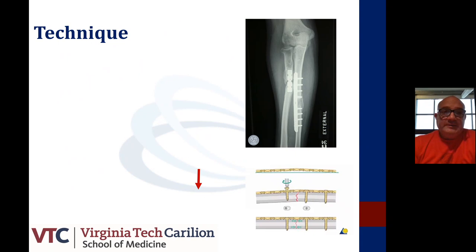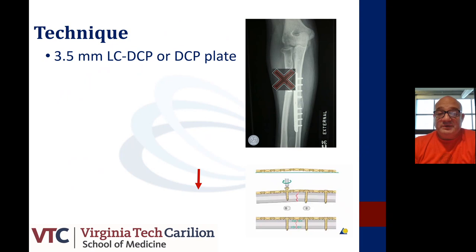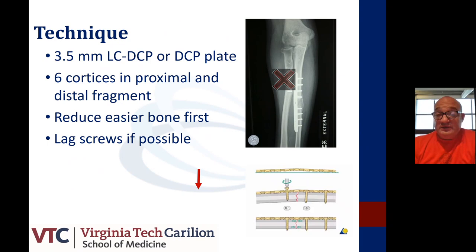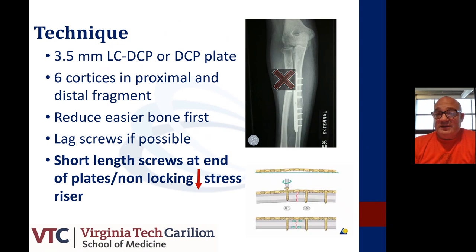You must provide a slight pre-bend when providing compression plating at the radius. For comminuted fractures with intersegmental bone loss, use long contoured plates with a good balanced screw spread. You want to avoid the short plate technique. Use 3.5 millimeter LCDCP or DCP plates, with six cortices both proximal and distal to the fracture. Reduce the easier bone first. Use locking screws when possible, and use shorter length screws at the ends of the plates, as non-locking screws at plate ends decrease the incidence of stress risers.